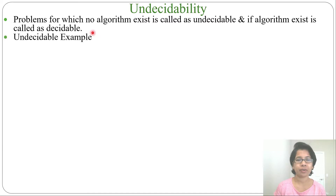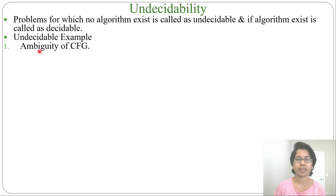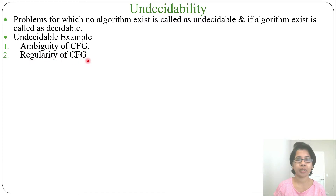Examples of undecidable problems: First is ambiguity of CFG. Whether a context-free grammar is ambiguous or not is undecidable. We have to try randomly by checking some strings, but there is no algorithm for finding ambiguity of a context-free grammar. Second, regularity of CFG — whether a given context-free grammar is for a regular language or not is undecidable.